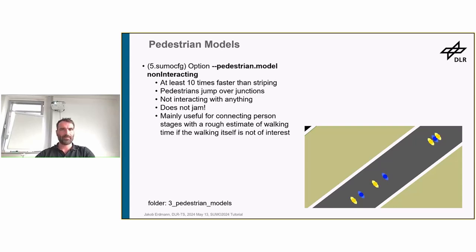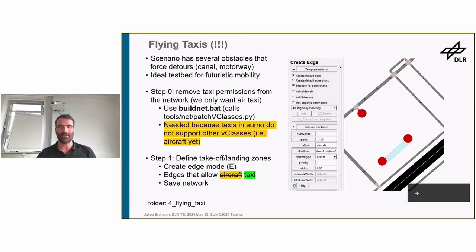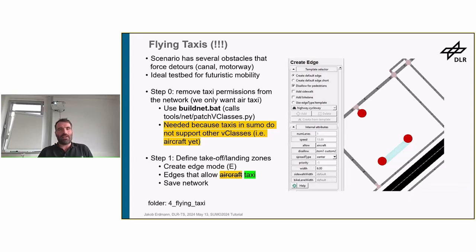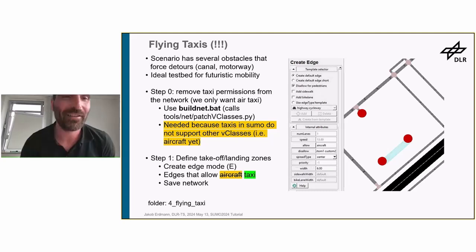Moving on to the next topic: flying taxis. As discussed, the scenario has several obstructions caused by the cutting of the network, but also by a canal in the middle and a motorway — so many pedestrians have to take long detours. In such a situation with long detours, we have an ideal test case for future mobility: flying taxis, which can just go over the obstacle and have fast and efficient routes to the destination.